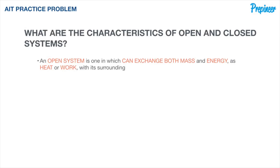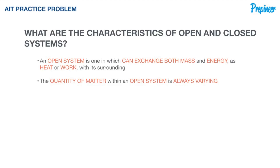An open system is one that can exchange both mass and energy — as heat or work — with its surroundings. The mass within the system may or may not be constant, and the processes occurring take on a flow-type nature. Water pumps, engines, boilers, turbines, and heat exchangers are all examples of open systems. Most engineering machines and equipment encountered in the real world are open systems.